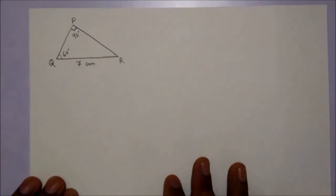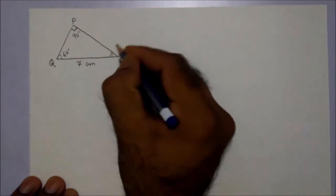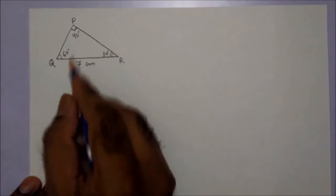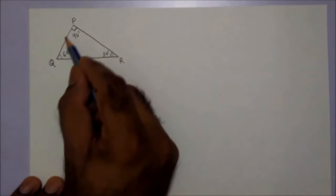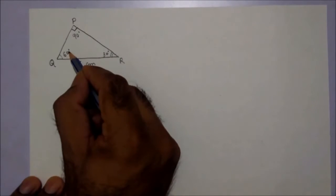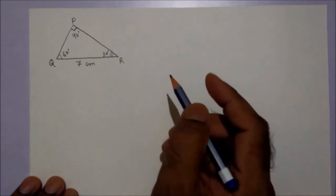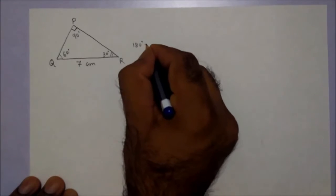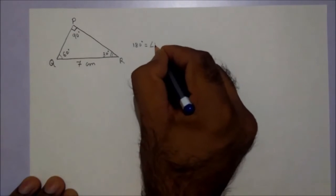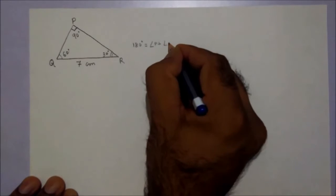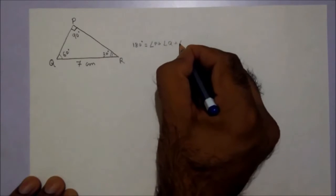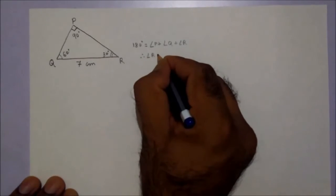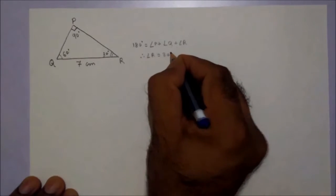By angle sum property, we will get angle R is 30 degree. 90 plus 60 subtracted from 180. So 180 degree equals angle P plus angle Q plus angle R. Therefore angle R is 30 degree.